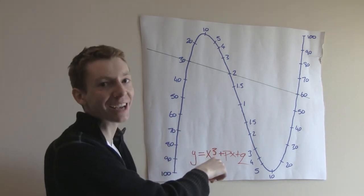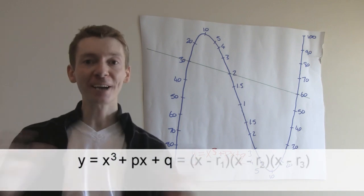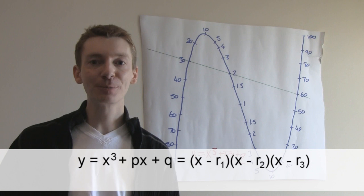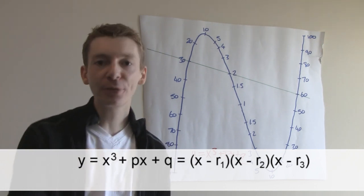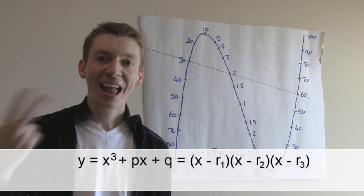So now that we've got this depressed cubic, y equals x cubed plus px plus q, it's a mathematical fact that we can factorise that into three terms where you've got x minus something. That something is called a root. So you've got root 1, root 2 and root 3.